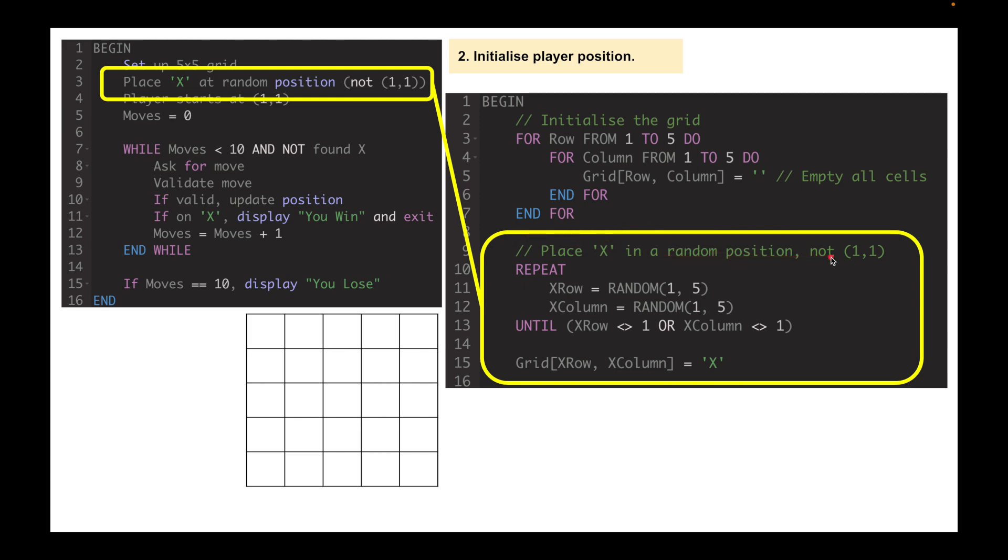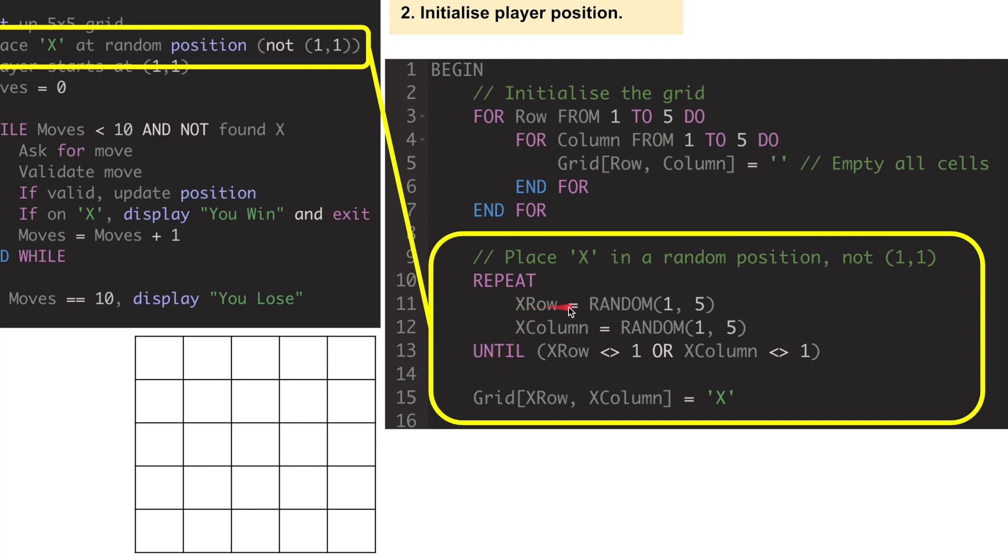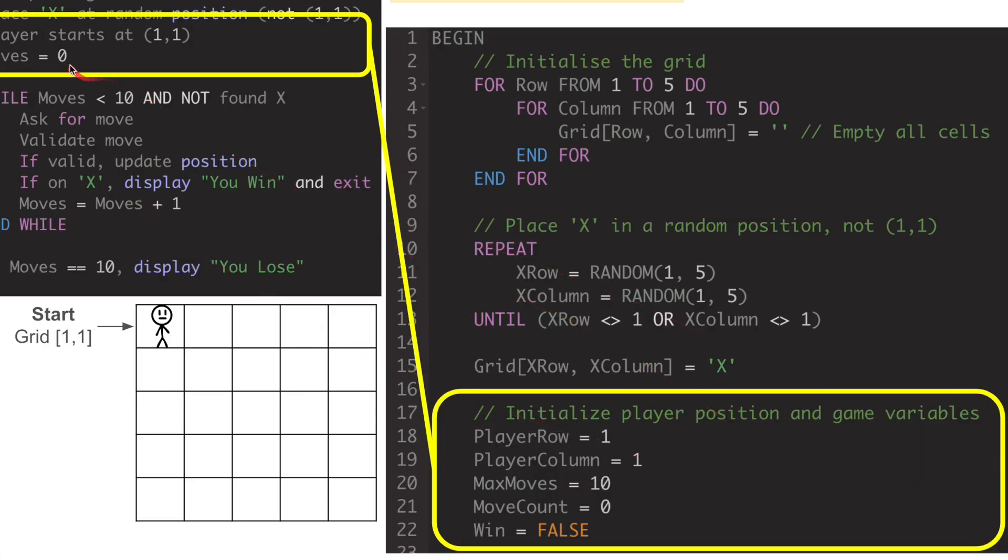Then I'm going to place the X in a random position. Repeat until. X row equals random 1 to 5. 1, 2, 3, 4, 5. I'm not using zeros here, just keeping it simple. X column equals random 1 to 5. Until X row is more than 1 or X column... grid X row X column equals X. So somewhere in this random grid we've placed X. I've put a string here. So finally, player starts at position 1-1. Player row equals 1, player column equals 1. Max moves equals 10. I'm setting all the variables here. Move count equals 0. Win equals false. So we've got a boolean there. We've got some numbers for the counting. Player is at 1-1.